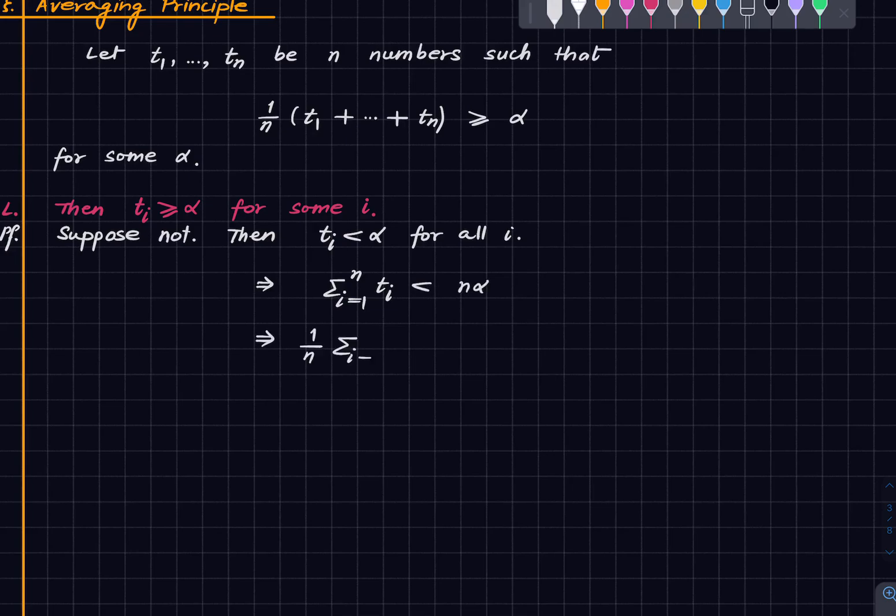And now the average is strictly less than alpha. And that's a contradiction to the hypothesis that the average is at least alpha. So it's very simple.